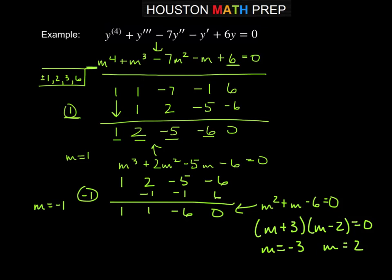So we have four zeros. So we have m equals 1, negative 1, 2, and negative 3. And we'll use those values for m to write our general solution.